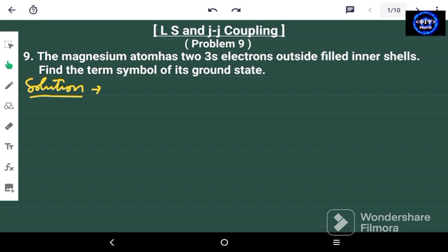Hello friends and welcome again to my channel PhySci. This is problem number 9 on LS and JJ coupling. In this particular problem we have given that the magnesium atom has two 3s electrons outside filled inner shells. We have to find the term symbol of its ground state.